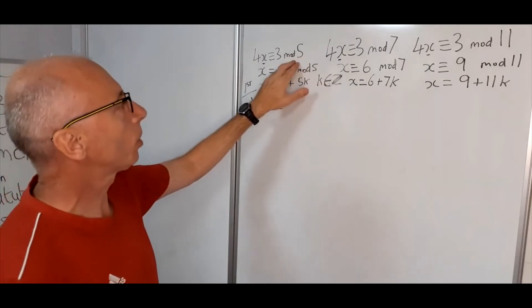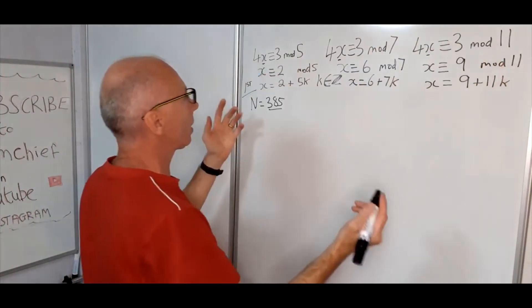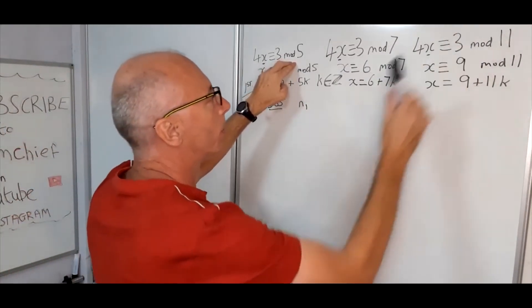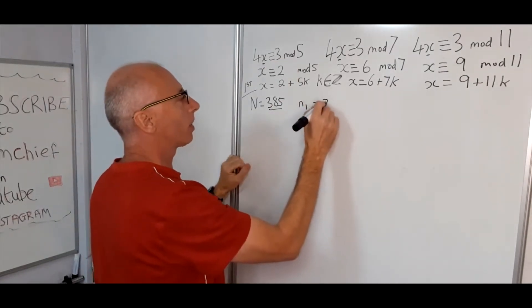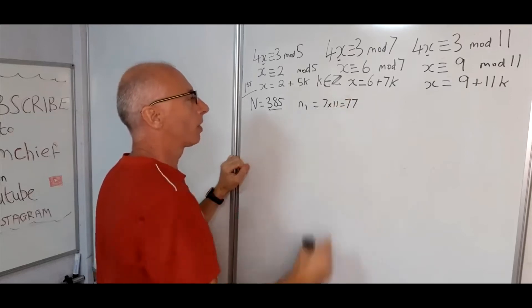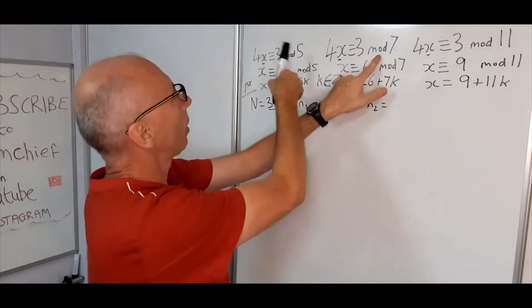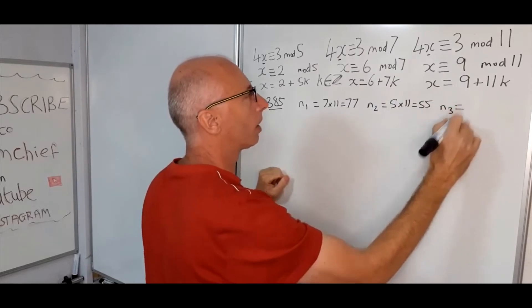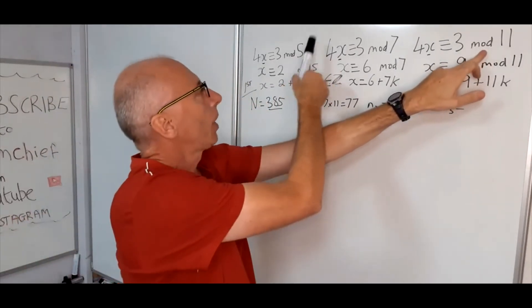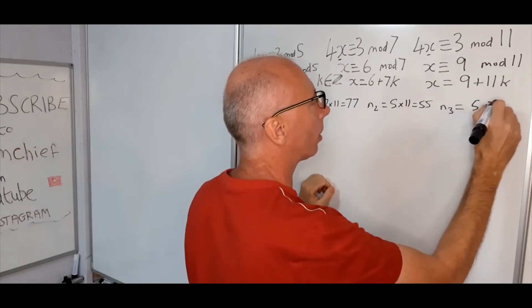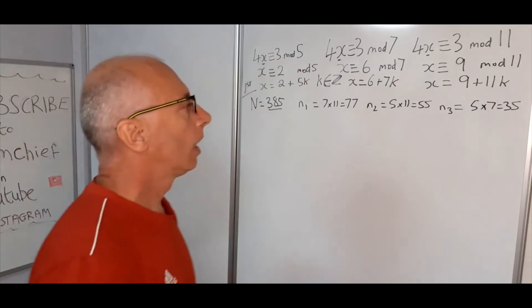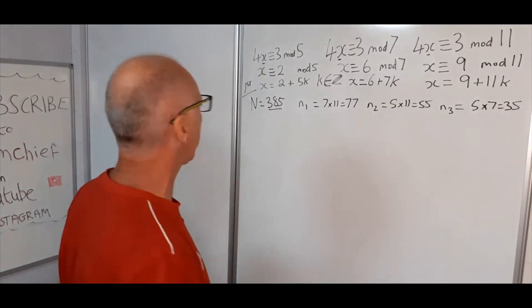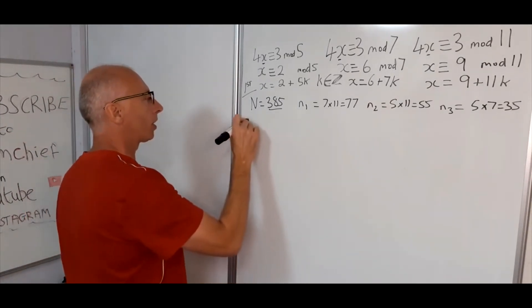Now we need the modulo of each one with the other two. So basically to explain that, so n1 for example, that's taking care of this one. We multiply these two modulars. So that n1 would be 7 times 11, which is 77. n2, we've got 5 times 11, which is 55. And n3, so now we've got 5 times 7, which equals 35. So now these numbers are now our important numbers for the next stage. So the next stage, let's just call this the second stage.